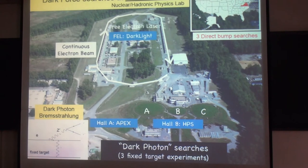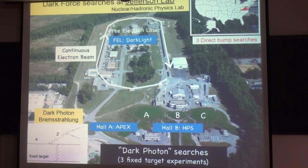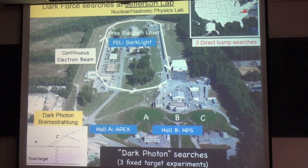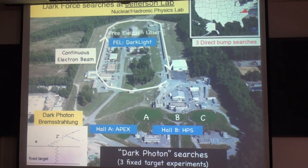The Jefferson Lab or JLab is located in Virginia. This is mainly for nuclear or hadronic physics, but there are also three fixed target experiments to search for the dark force. This is the continuous electron beam, and this continuous beam can be routed to three experimental halls: Hall A, Hall B, and Hall C. In Hall A there's an APEX experiment, in Hall B there's a heavy photon search, and there's a free electron laser facility with a dark light experiment.